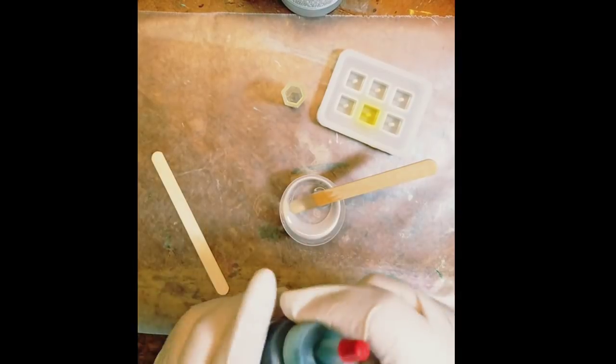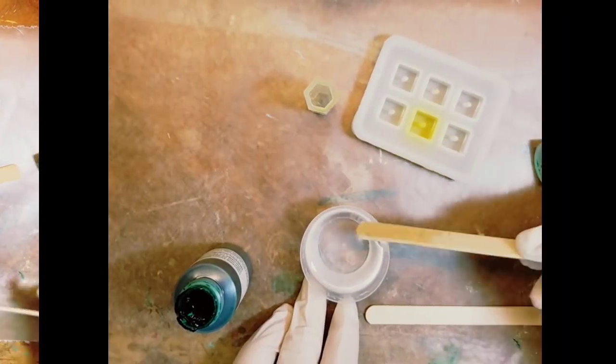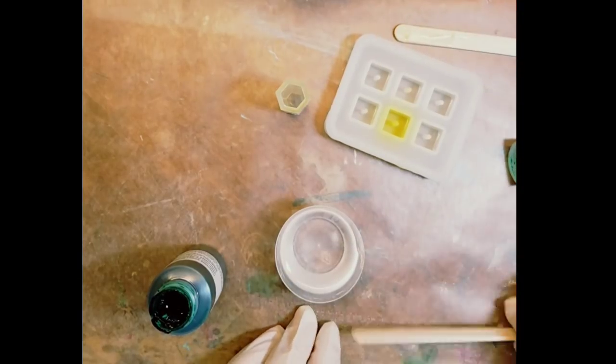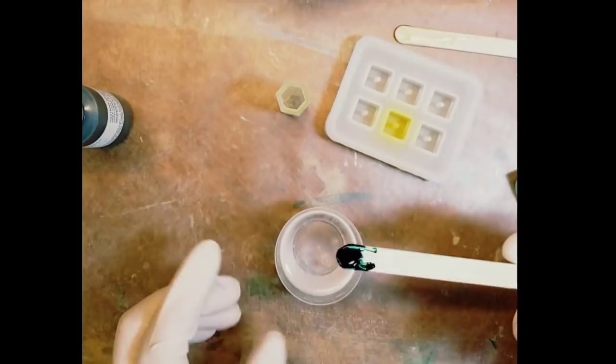Once the resin has sat for about two minutes, I'm going to add some Resin Obsession transparent dye. I only need a little bit so I'm going to take my popsicle stick, just grab a little bit of color and mix it in the resin.